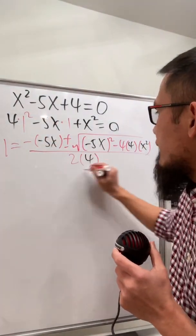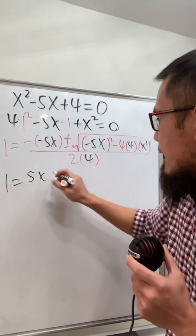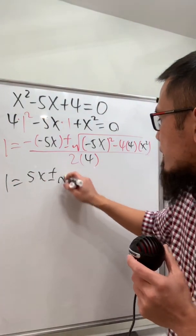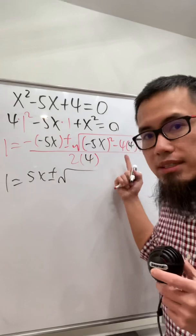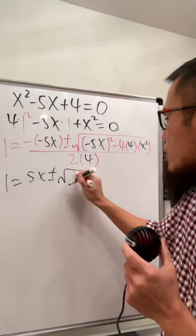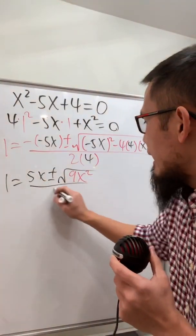And now we have 1 is equal to 5x, and then plus or minus, open the square root. This is 25x squared. This is minus 16x squared. We have 9x squared divided by 8.